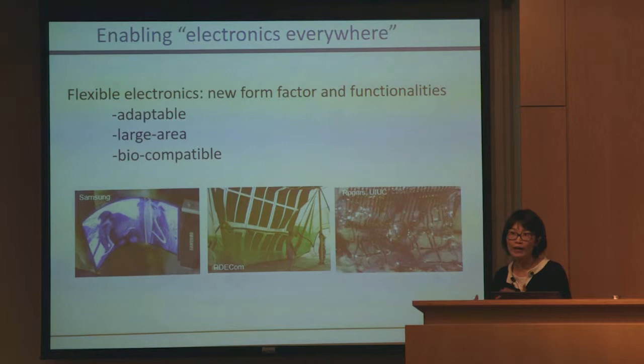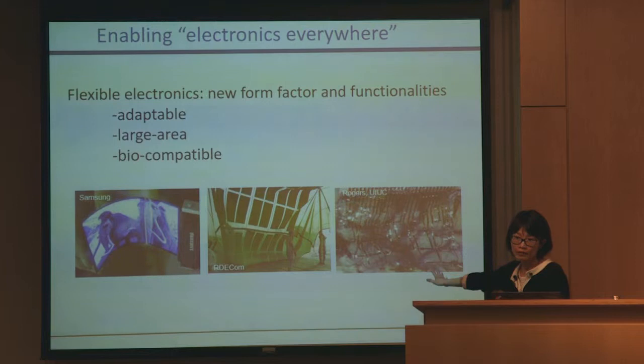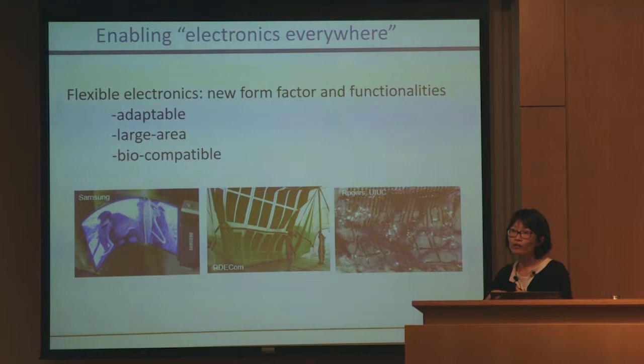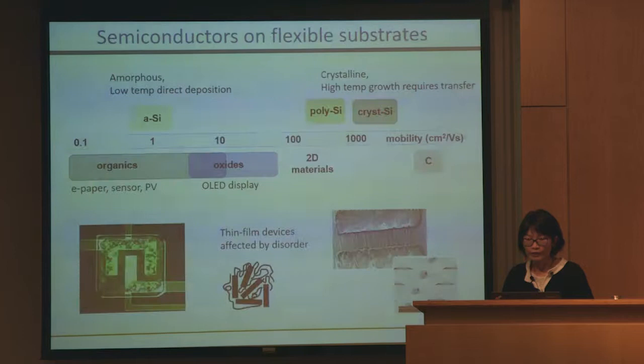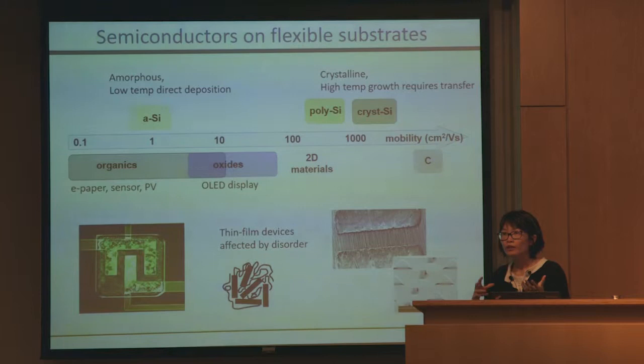This big field of flexible electronics started at the display end. Then people started using the same materials for other applications, like solar cells where you can generate electricity in remote areas — much better than building grid infrastructure in some respects. And in the last three to five years, people have been incorporating electronics into bio-tissues — bio-electronics — where, for example, they put electrodes on dissolvable material. When integrated onto tissue, the material dissolves conformally and you have much better signal-to-noise ratio with this type of flexible structure.